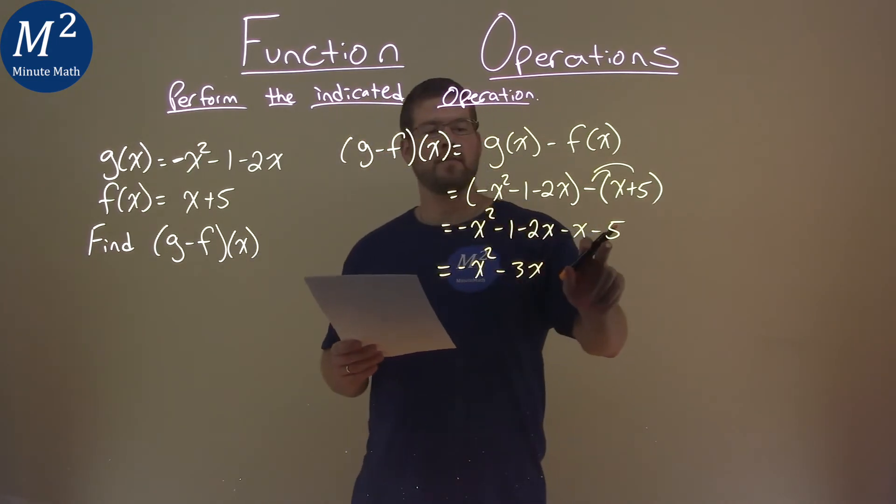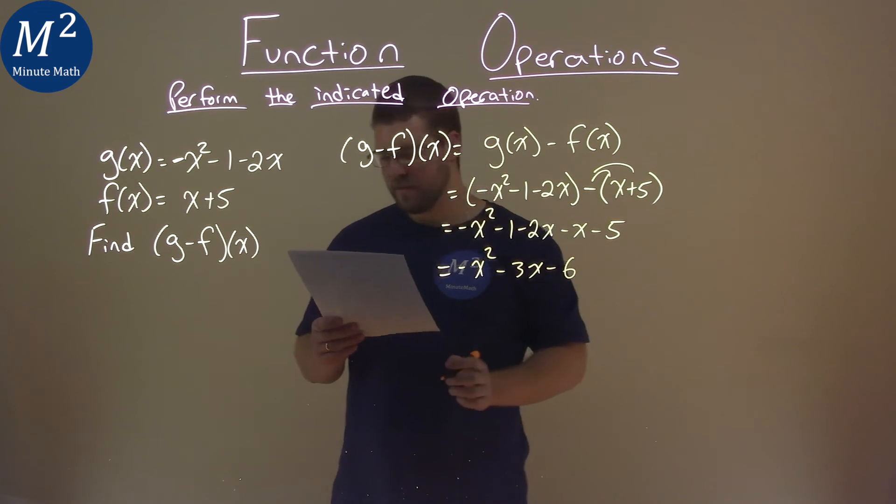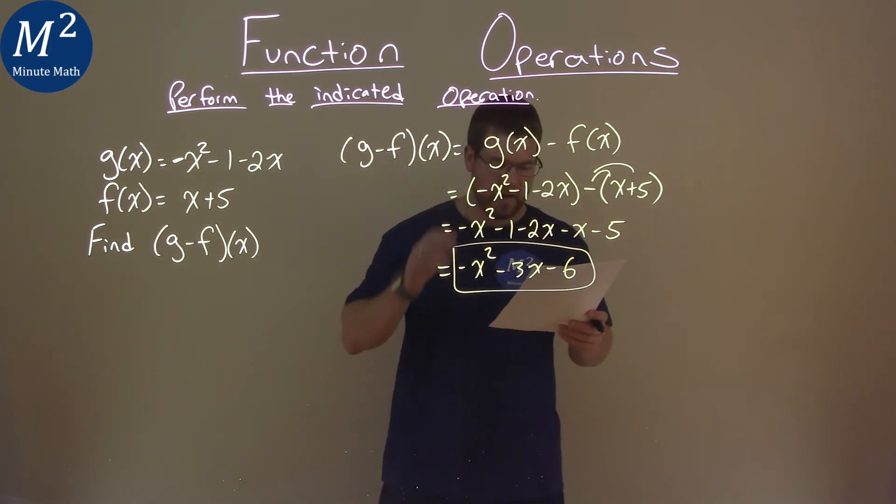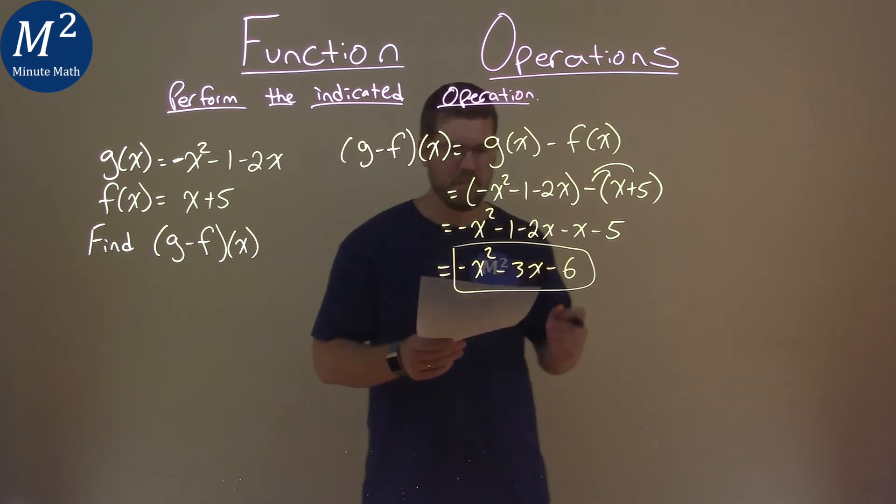Then a negative 1 minus a 5 is a negative 6. And so our final answer here is actually just a negative x squared minus 3x minus 6.